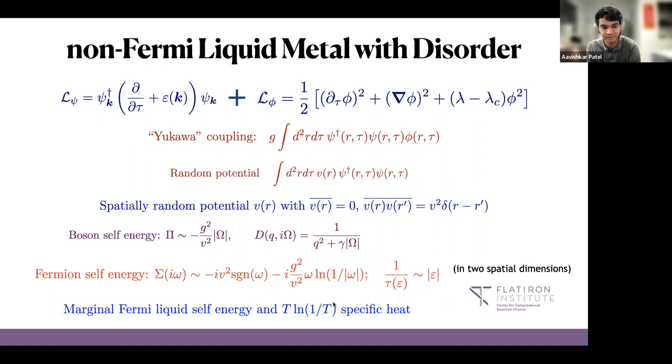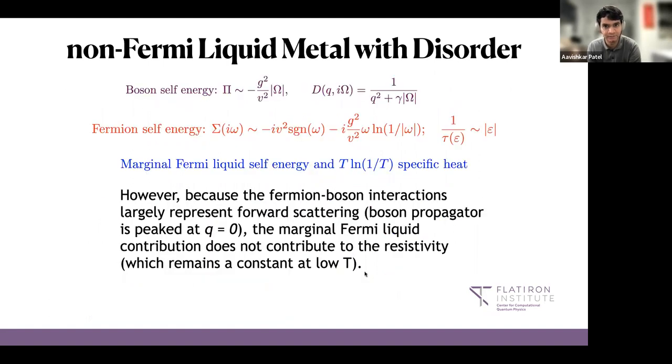So if you do this calculation at finite temperature you find that it scales as temperature and this omega log omega self-energy also produces this T log T specific heat. However, from the point of view of transport, what happens is that your fermion-boson interactions, the fermions scatter off bosons that are mostly close to zero momentum because the boson propagator is peaked near q equals zero and those are forward momentum conserving scattering processes that don't relax any current or momentum.